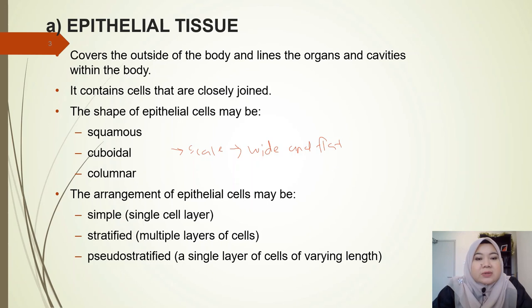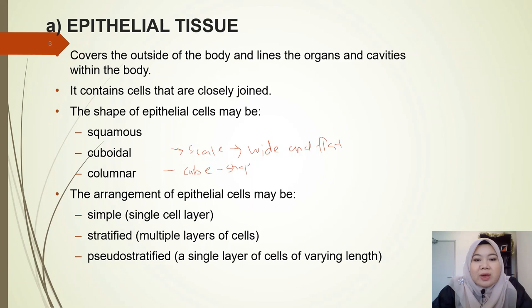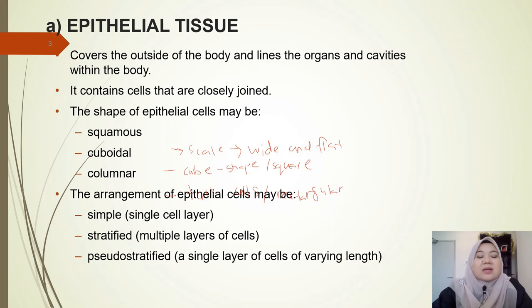The next shape is cuboidal. Cuboidal cells have a cube shape — you can also describe them as square-shaped. And the last shape is columnar. Columnar cells are basically tall epithelial cells, or you can describe them as having a rectangular shape. So those are the three shapes of epithelial cells.